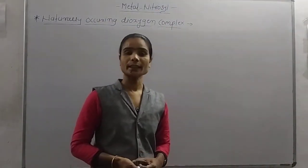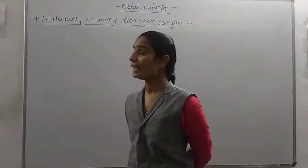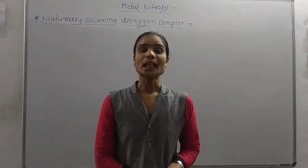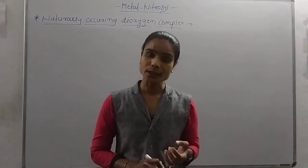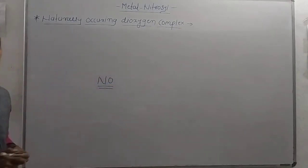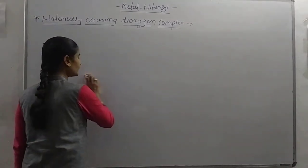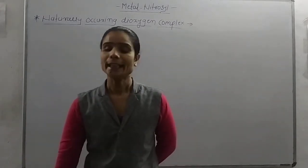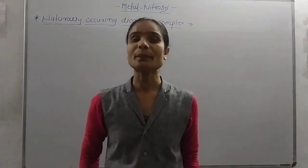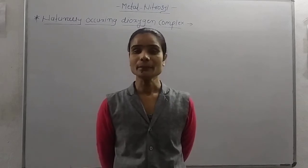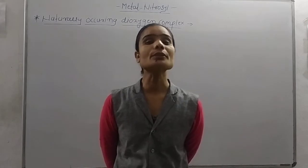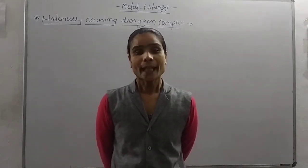Hello friends, welcome again. In the last lecture we started the new chapter on metal nitrosyl. We already completed metal carbonyl, and in this new chapter we see that just like carbon monoxide acts as a neutral ligand and strong ligand, similarly nitrogen oxide (NO) is called nitrosyl, and nitrosyl also acts as a ligand. We will also look at one important example of metal nitrosyl — sodium nitroprusside (Na₂Fe(CN)₅NO) — including its preparation, properties, structure, and applications.